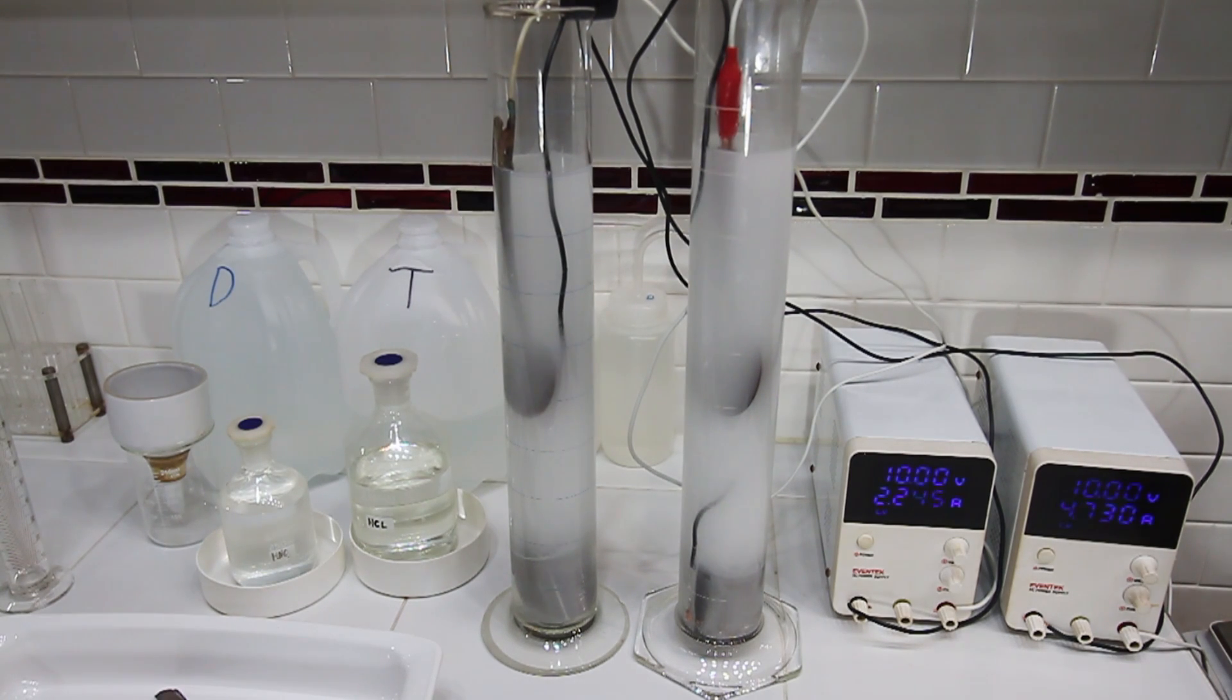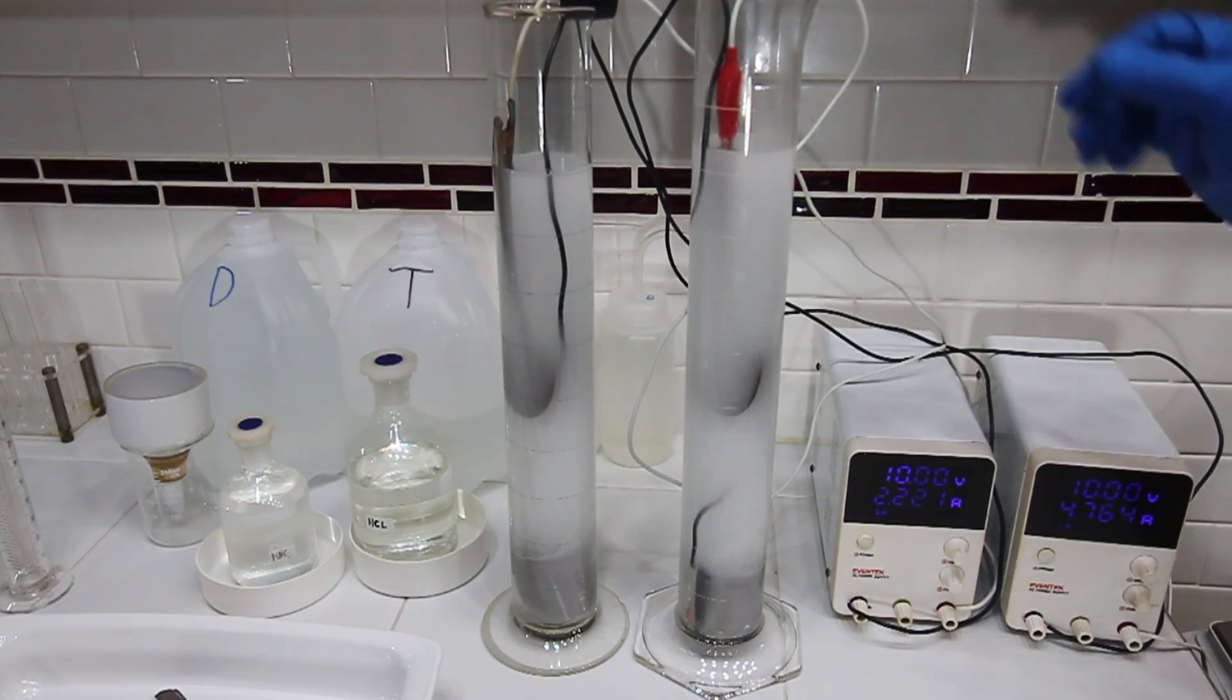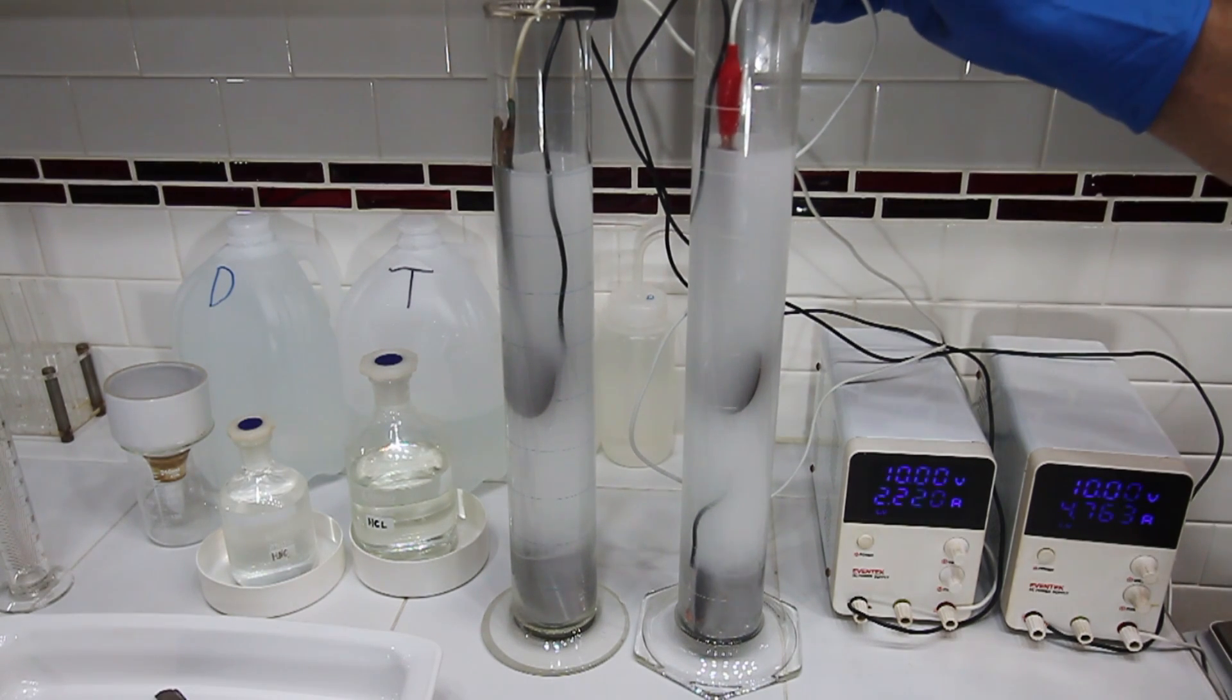First thing I'm noticing here is I'm getting twice the amps. So this reaction—this electrolyte is definitely producing a larger current, so this should work faster. I'm going to set a timer and we're going to let this run for 10 minutes.